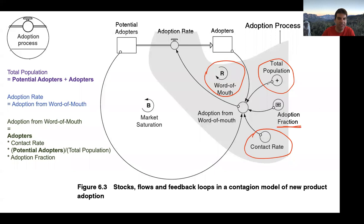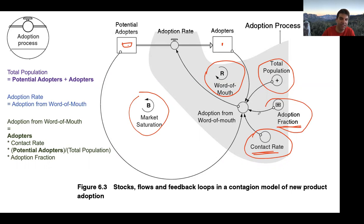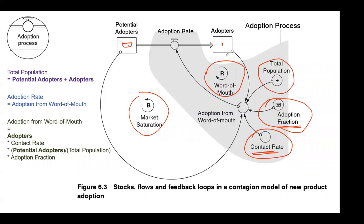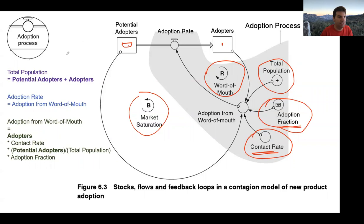The adoption fraction models what fraction of those encounters actually turn into new adoptions. All of these combine: potential adopters flow into the adoption rate, which is the word-of-mouth reinforcing loop, but you run out of potential adopters over time — giving a saturation balancing loop. The contact rate represents how quickly those who have adopted can reach people who could potentially adopt, while how effective they are at converting them is tied up in the adoption fraction. This directly answers how contact rate affects the model.